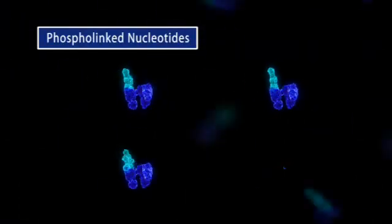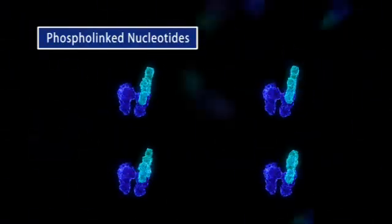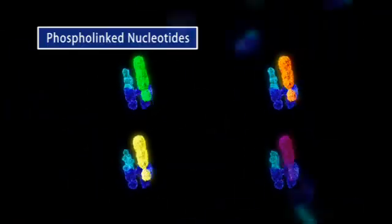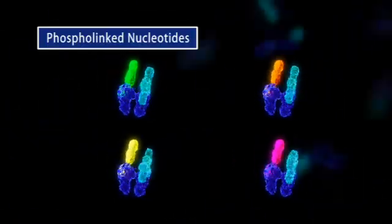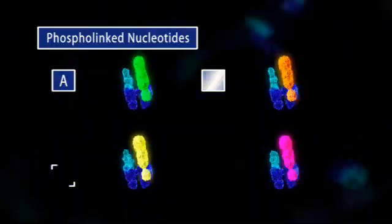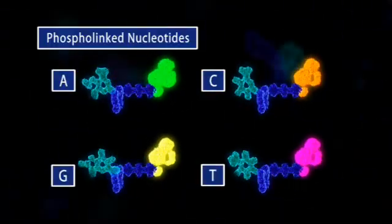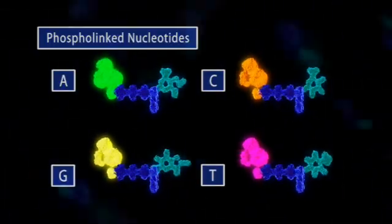The first is phospholinked nucleotides. To visualize polymerase activity, a different colored fluorescent label is attached to each of the four nucleotides, A, C, G, and T. In contrast to other sequencing approaches, our phospholinked nucleotides carry their fluorescent label on the terminal phosphate rather than the base.